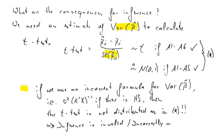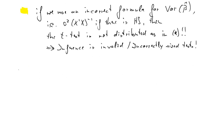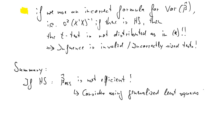Just a quick reminder: if you set alpha at 5%, you would expect to reject a correct null hypothesis 5% of the time. With an incorrectly sized test, you may reject more or less often. Summary so far: if there is heteroscedasticity, beta hat OLS is not efficient. To combat that, we could consider using a generalized least squares (GLS) estimator, and there will be further discussion on that.